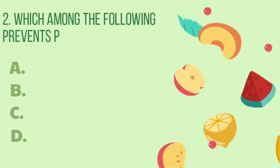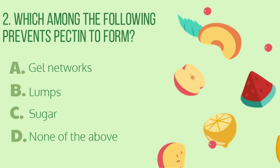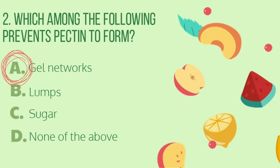Number 2. Which among the following prevents pectin from forming? Letter A: Gel networks. B: Lumps. C: Sugar. D: None of the above. The correct answer is letter A.